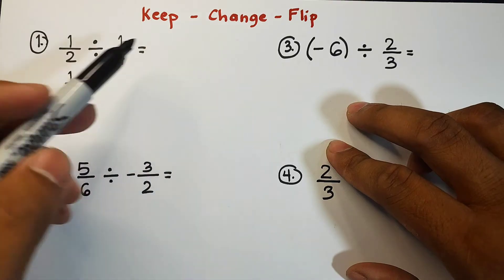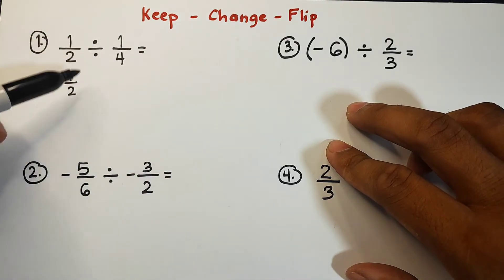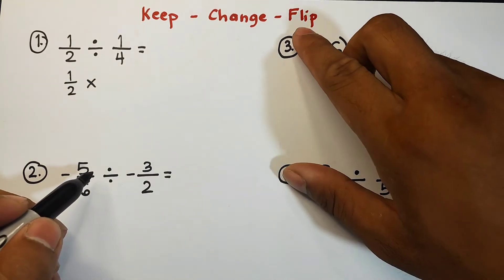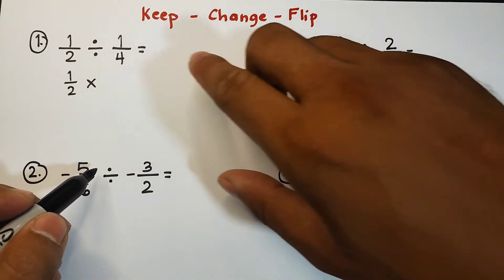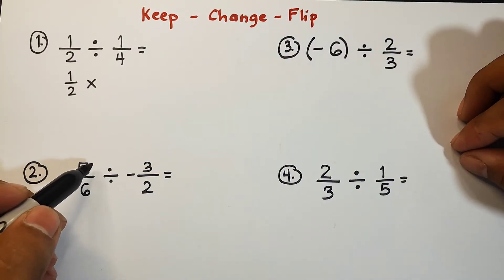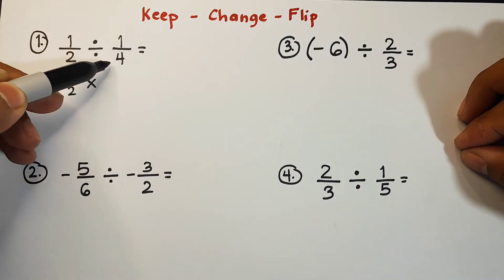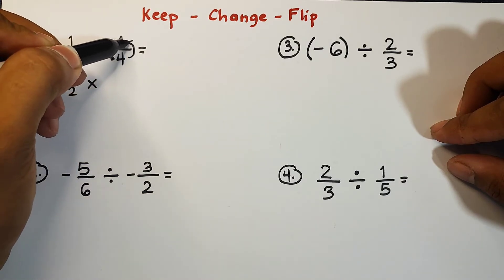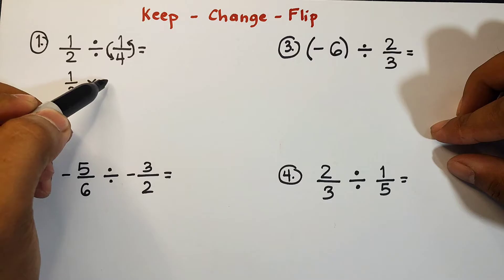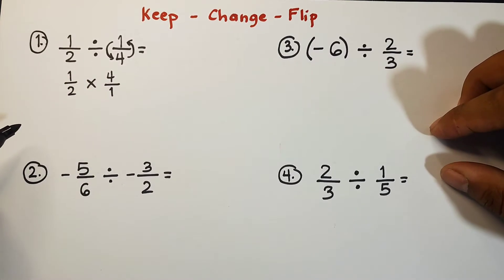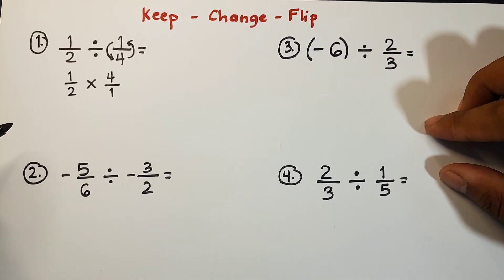Next, change, meaning change this operation of division to multiplication. Next, flip. We have here one-fourth. You will flip the position of your numerator and denominator, and it will go like this. And the flip of one-fourth is four over one. Or you're simply getting the reciprocal of the rational number.